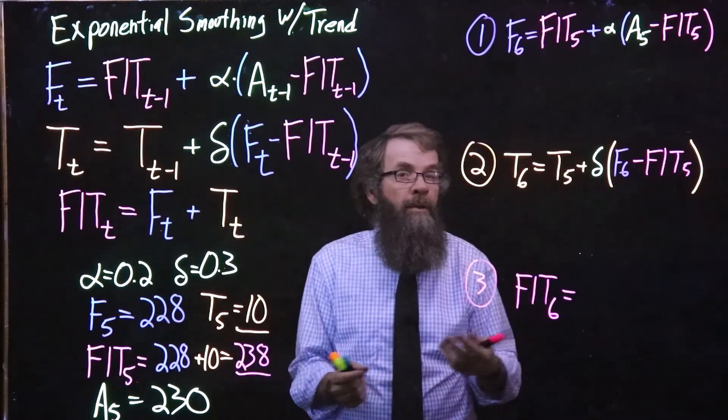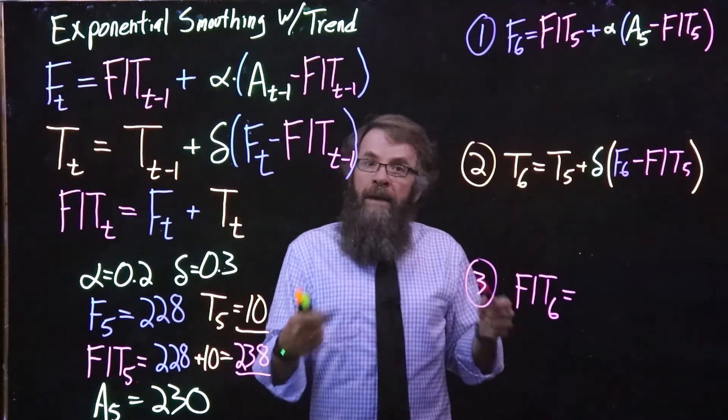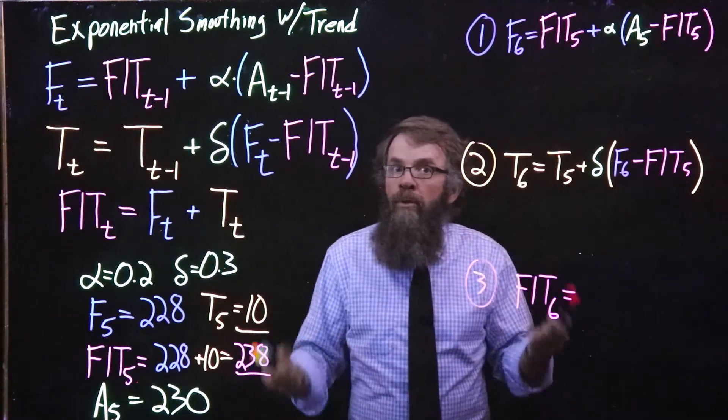It's called double exponential smoothing because we have two quantities that we are averaging or adjusting or smoothing each time.